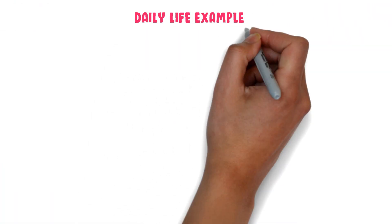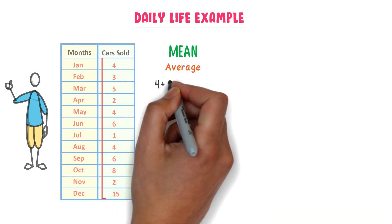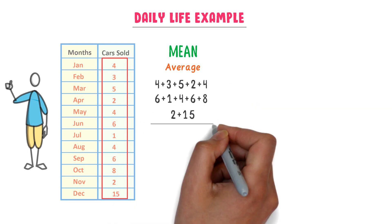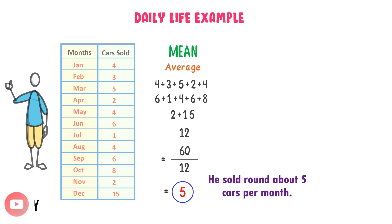Lastly, let me teach you how we can use this concept in our daily life. Consider Mr. Tom — let Mr. Tom have sold these cars every month for a whole year. This is the list of cars sold by Mr. Tom in a whole year. We know that mean is the average number. I add all these numbers, and we know that the total months in a year is 12. After adding all these numbers, I get 60 divided by 12, and I get 5. So the mean of this data is 5, which shows that Mr. Tom sold roundabout 5 cars every month.